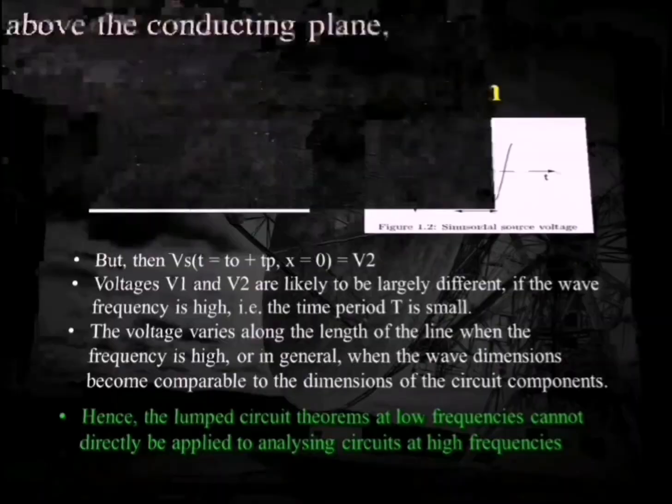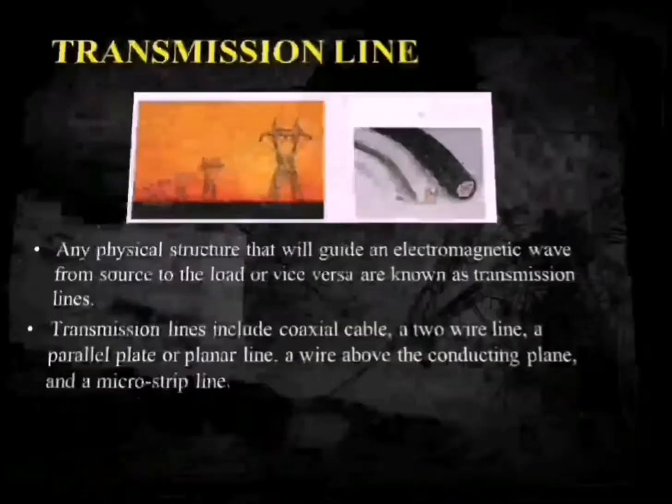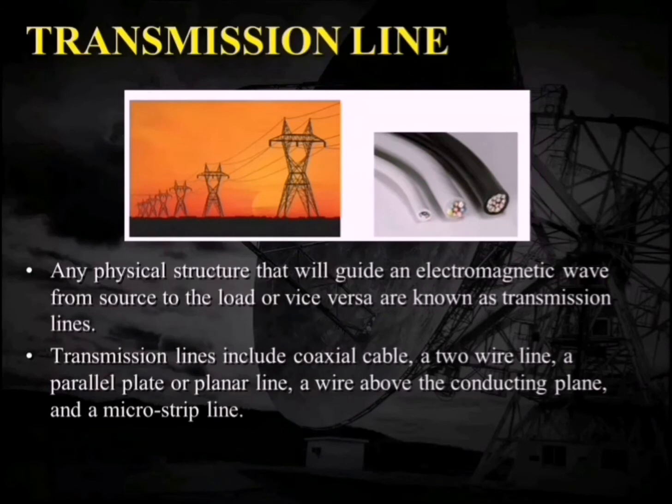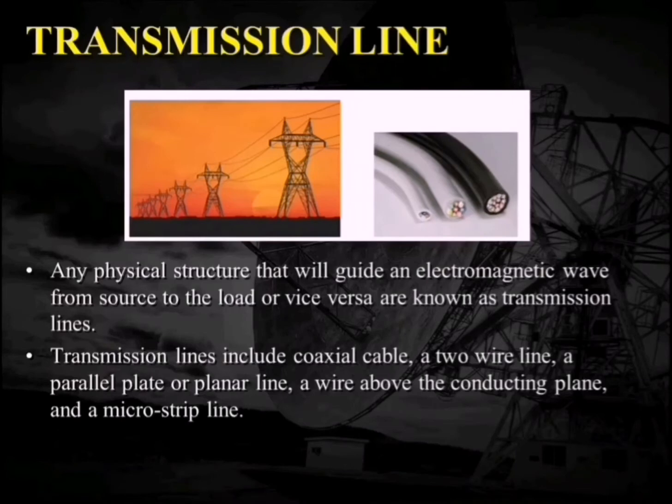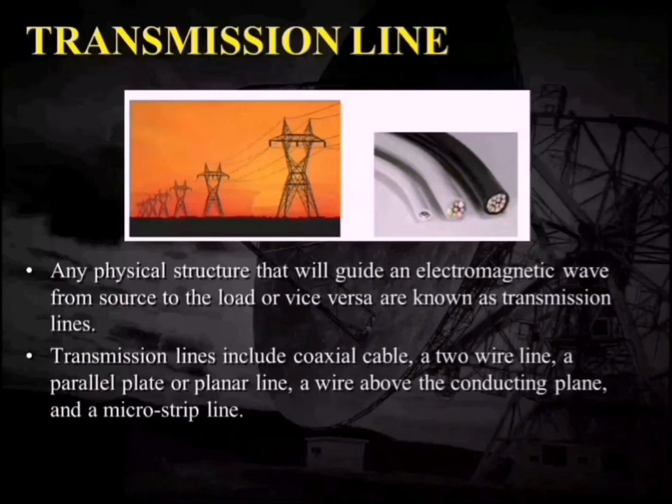Next, we will discuss transmission lines. We have seen these kinds of wires hanging on poles. These are physical structures that guide electromagnetic waves from source to load or vice versa, and these are known as transmission lines. Transmission lines also include the coaxial cable, a two-wire line, a parallel plate or planar line, a microstrip line, or a wire above a connecting plane — these are all examples of the transmission line.